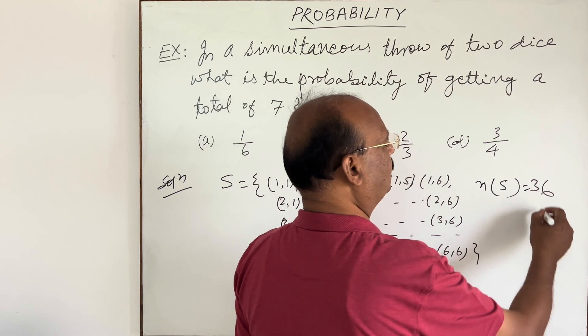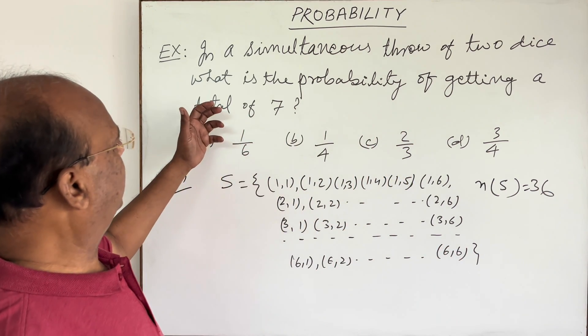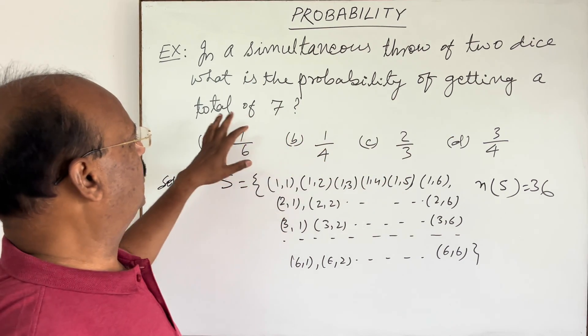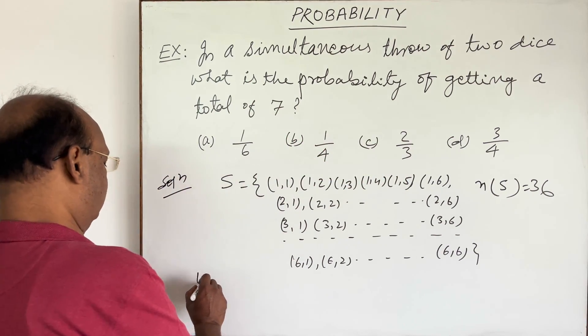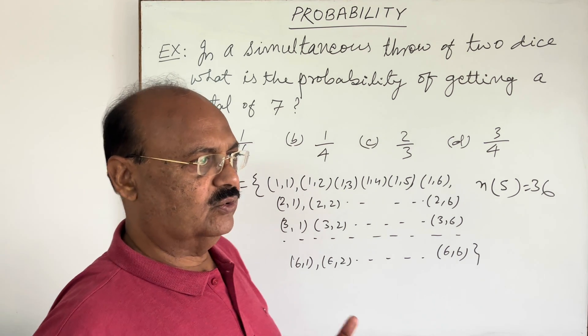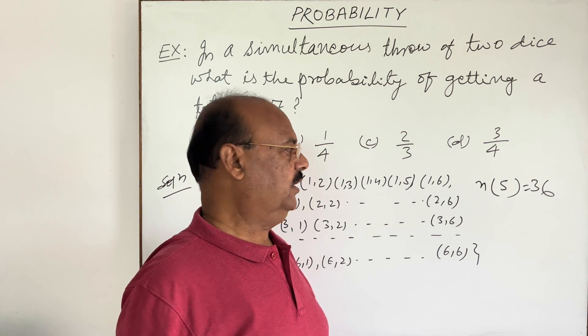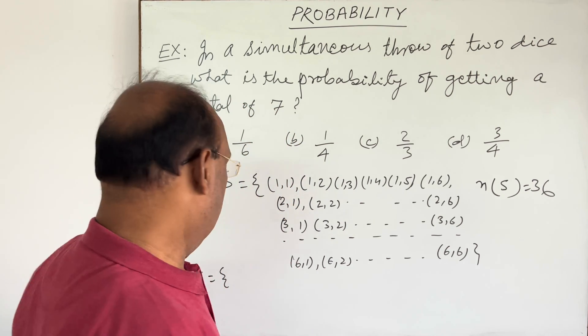Now what we are expecting to get - the probability of getting a total of seven - is known as an event. This is when we want to get the desired result. So what are the possibilities of getting seven?